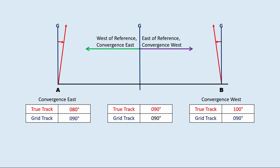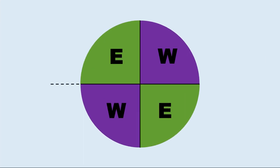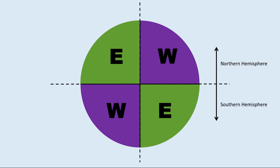From the values of true north and grid north at points A and B, we can conclude: convergence east means true east, and convergence west means true west. This can be simplified into the EWWE diagram. The top half represents the northern hemisphere, the bottom half represents the southern hemisphere. The left half represents positions west of the reference, and the right half represents positions east of the reference. The letters EWWE refer to convergence, where E is east and W is west.